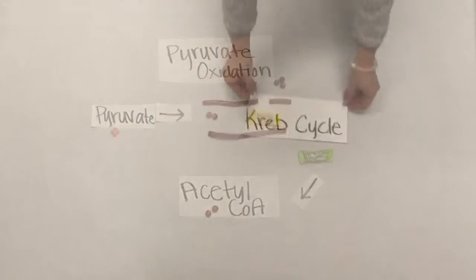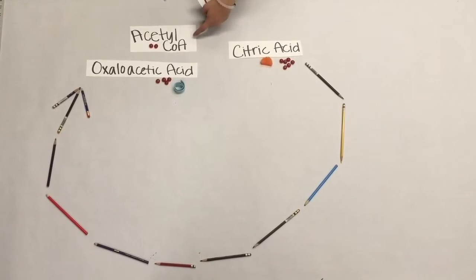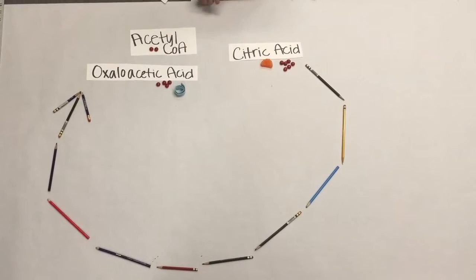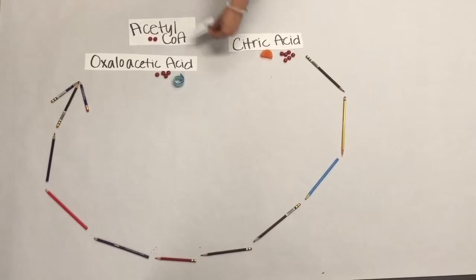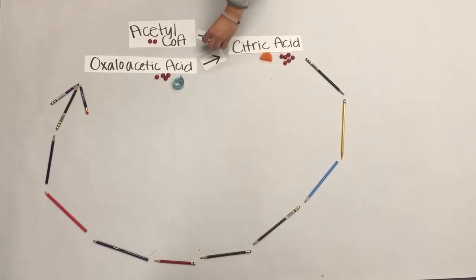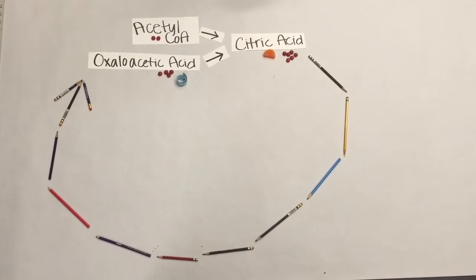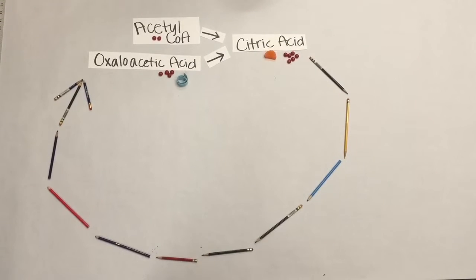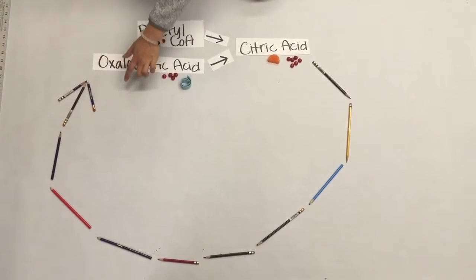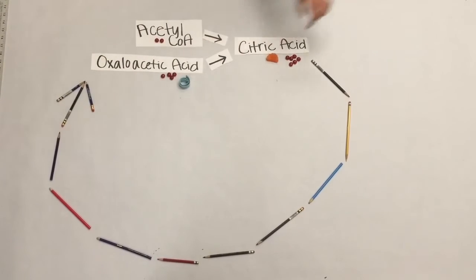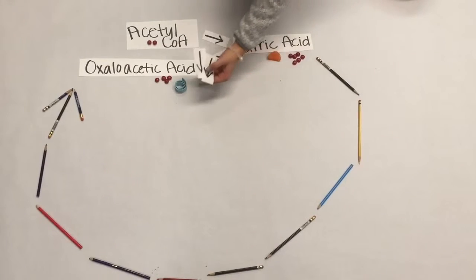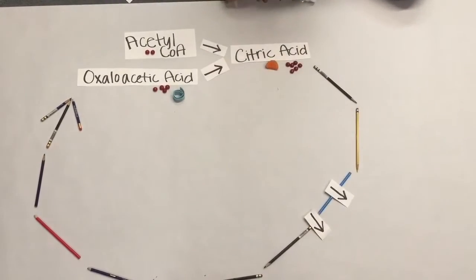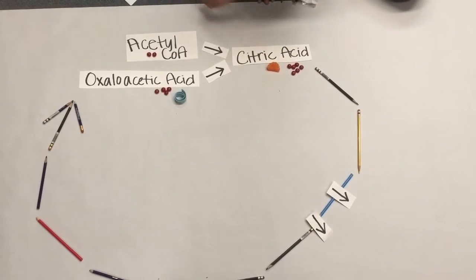Next we begin the Krebs cycle. The acetyl-CoA merges with oxaloacetic acid, a four-carbon molecule. Those then react together through enzymes to form citric acid, a six-carbon molecule. Now the citric acid will be oxidized through a long process to get back to oxaloacetic acid, the four-carbon molecule. Two carbons have to clear out and join with oxygen.